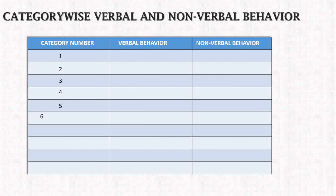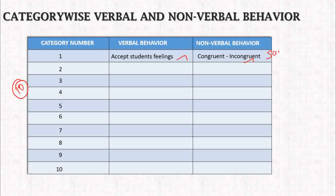There are totally 10 categories in this interaction analysis. The first category: the verbal behavior is 'accept student feelings,' and the non-verbal behavior is congruent or incongruent — congruent means similar or the same, while incongruent means different. When the teacher speaks, that is verbal behavior; signs or hand movements are non-verbal behavior. When the teacher accepts any student's feelings, the observer marks category number one.